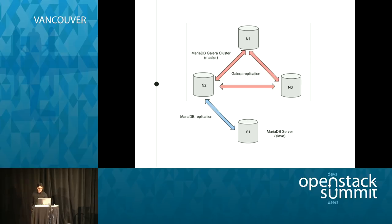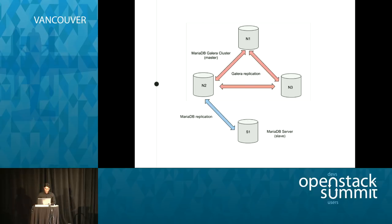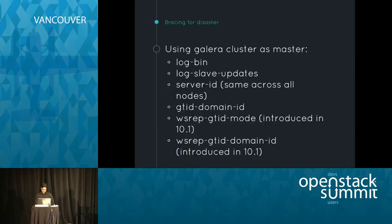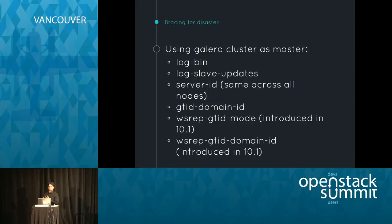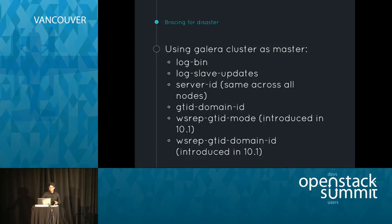Settings to enable this topology include: logbin to enable binary logging so the slave can read that information, log_slave_updates, server_id (which should be the same across all nodes), and settings to enable replication using GTID.